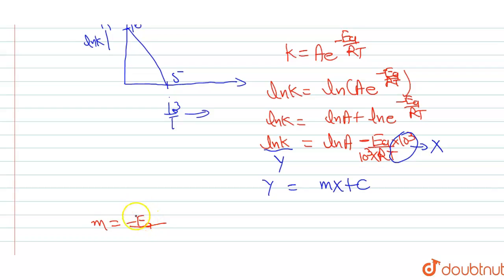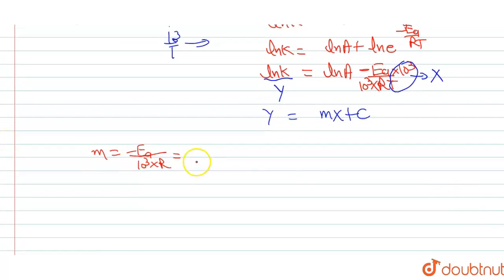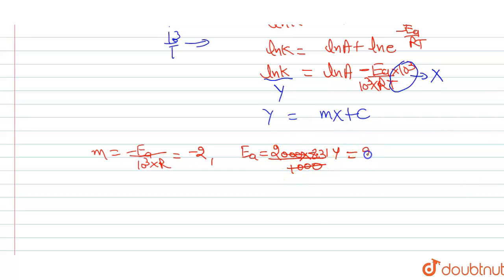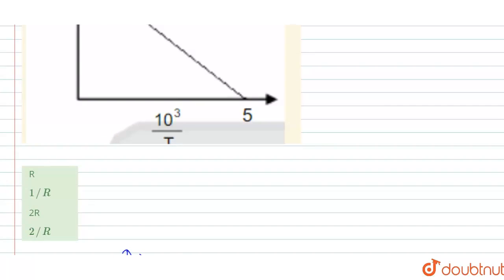The slope equals (y₂ − y₁)/(x₂ − x₁). The two points are (0, 10) and (5, 0), so slope equals (0 − 10)/(5 − 0) equals −2. Therefore, −Ea/(10³·R) equals −2, giving Ea equals 2000R. Converting to kilojoules by dividing by 1000, the activation energy Ea equals 2R. So the final answer is option C: 2R.